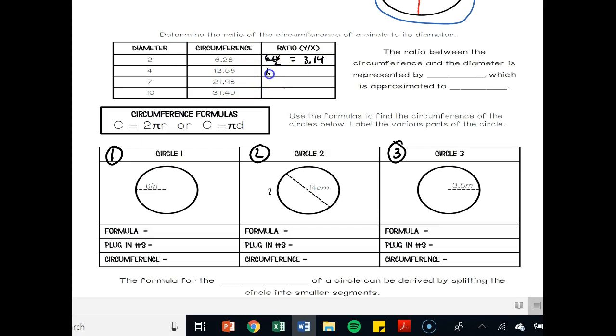Interesting. 12.56 divided by its diameter of 4, you get 3.14. Interesting. 21.98 divided by 7, you get 3.14.